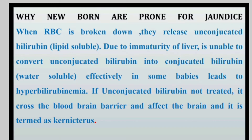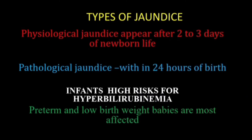Due to immaturity of the liver, the liver is unable to convert unconjugated bilirubin into conjugated bilirubin effectively. In some babies, that leads to hyperbilirubinemia. If unconjugated bilirubin is not treated, it will enter the brain barrier and affect the brain. That condition is termed kernicterus.